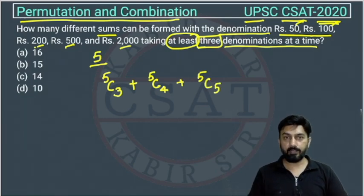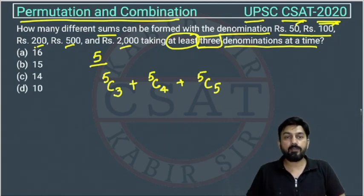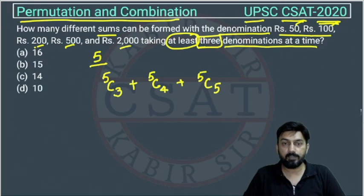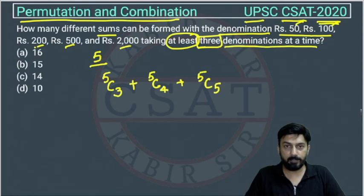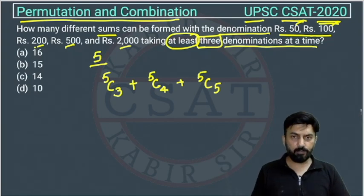We can select either three or more, because in the question they have given 'at least' — meaning three or more. So the minimum is three and the maximum can be five here.